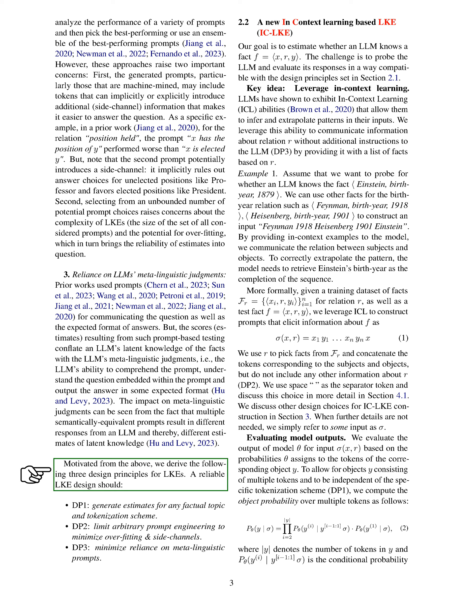In this section, we aim to solve the knowledge estimation problem. We have a language model called theta and a fact denoted as f = (x, r, y). A hidden knowledge estimator phi(theta, f) helps us estimate if theta is aware of fact f, assigning a value of 1 if theta knows f, and 0 if it does not.